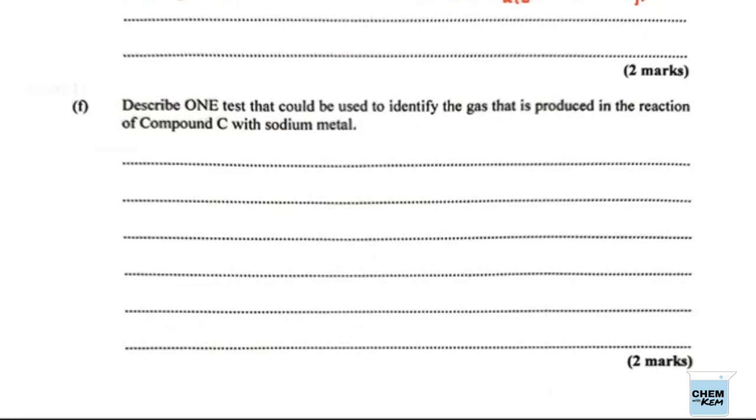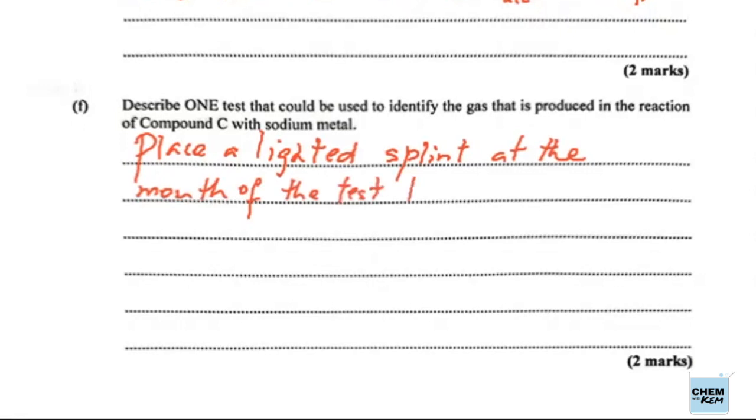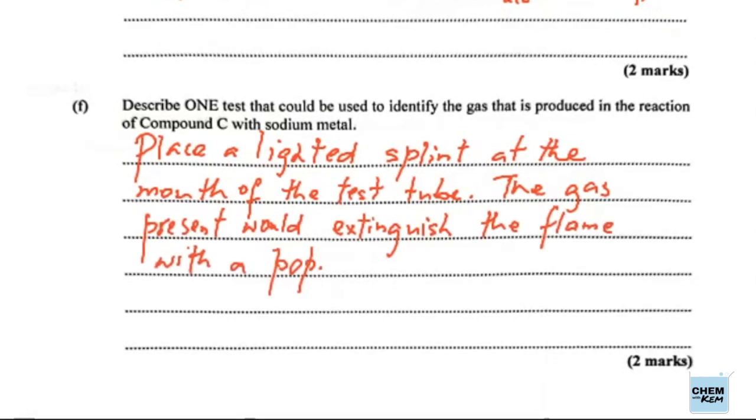Part F: Describe one test that could be used to identify the gas that is produced in the reaction of compound C with sodium metal. We'll have to tell them what we expect, not just the test, but what we expect to observe. We could just hold a lighted splint at the mouth of the test tube, and the gas present will put out the lighted splint with a pop. It's hydrogen. The pop that we hear is a mini explosion because hydrogen is explosive.